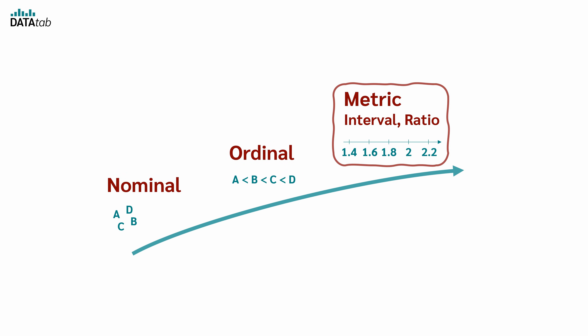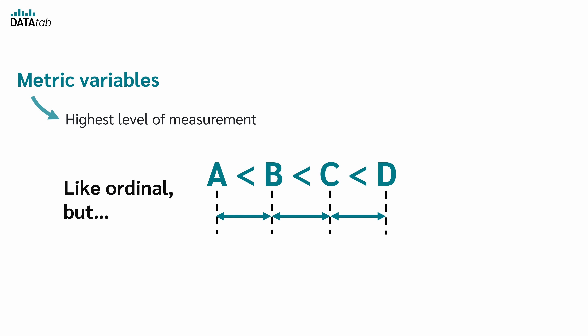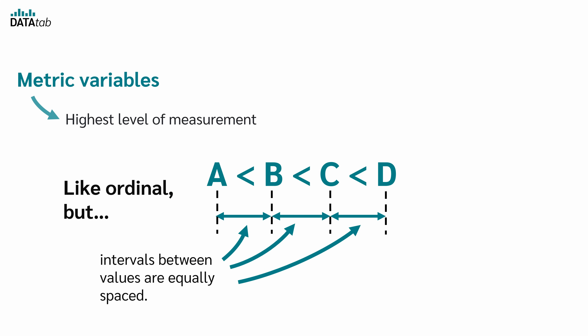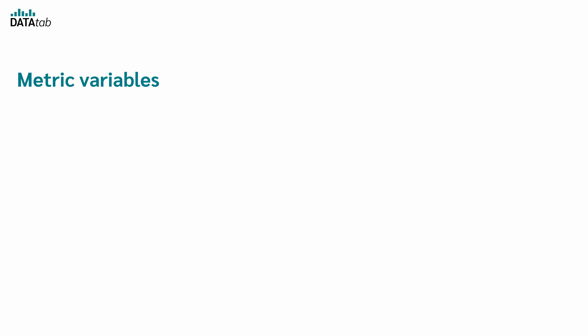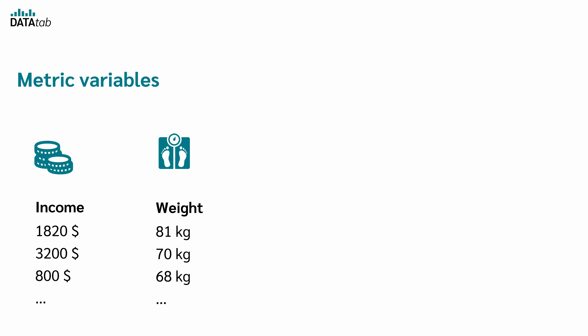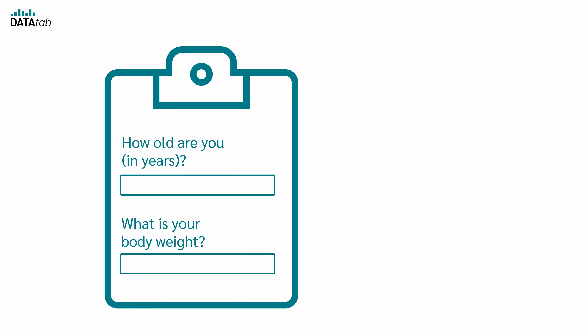What about metric variables? Metric variables are the highest level of measurement. Metric data is like ordinal, but the intervals between values are equally spaced. This means differences and sums can be formed meaningfully. Examples of metric variables are income, weight, age, and electricity consumption. If you ask for a metric variable in a questionnaire, there is usually just an input field in which the person directly enters the value, for example age or body weight.